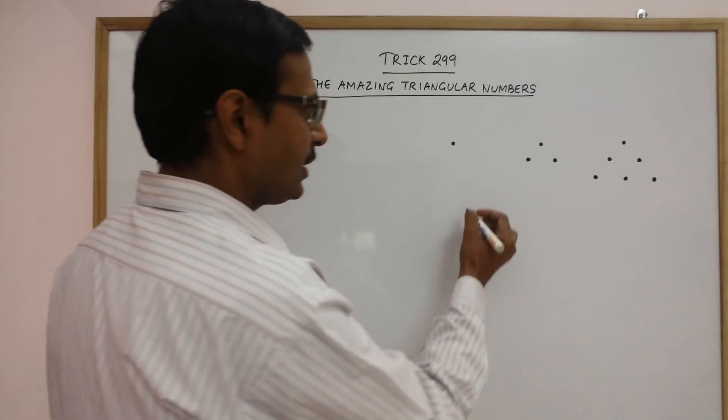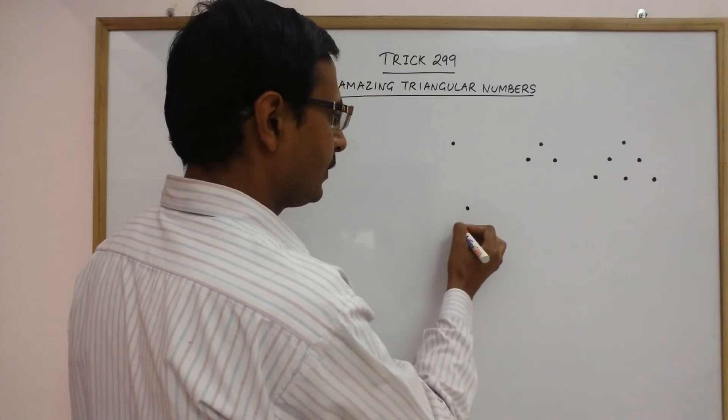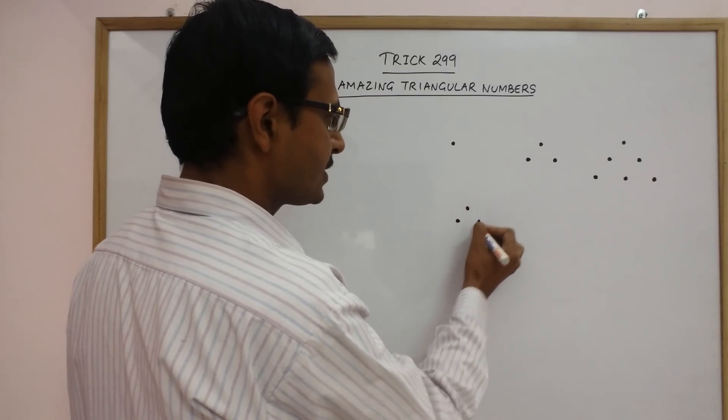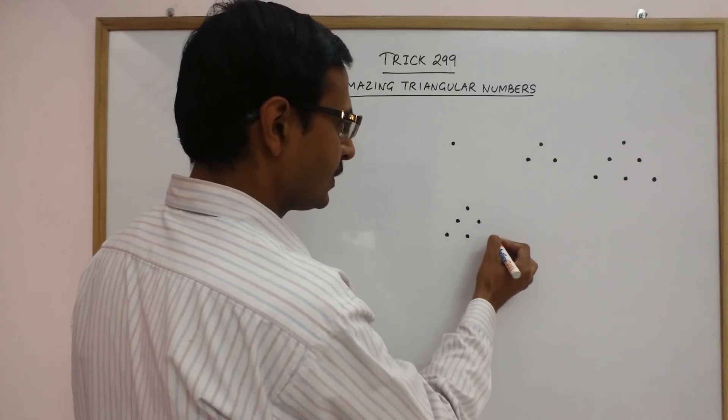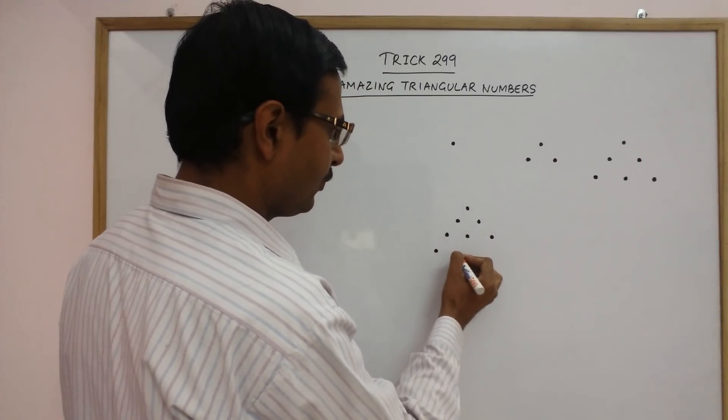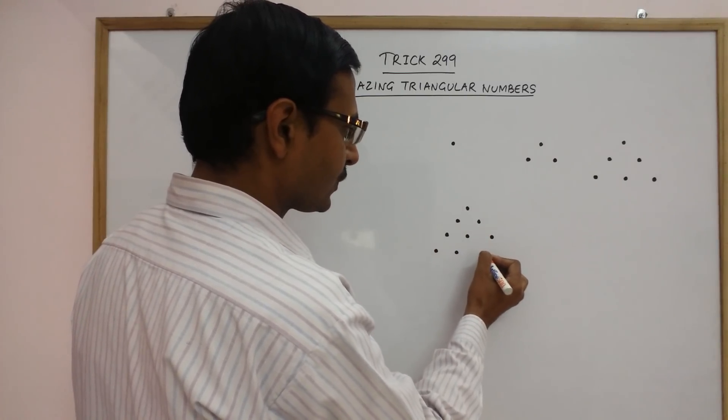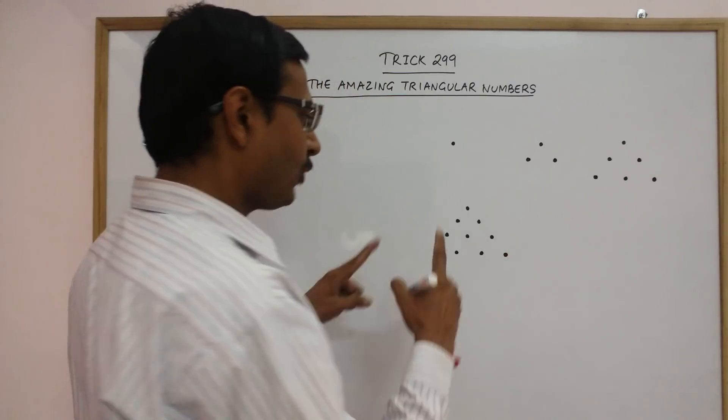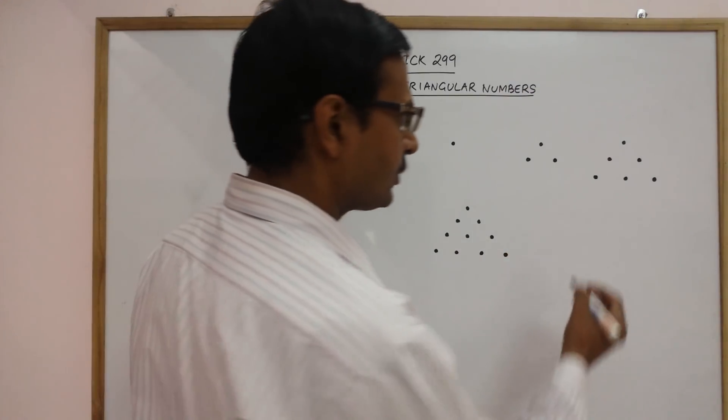Now, let us continue this sequence. This is 1 dot followed by 2 dots, followed by 3 dots and followed by 4 dots now. So, again forming a triangle and let me draw 1 more.